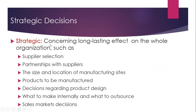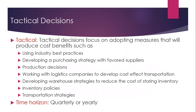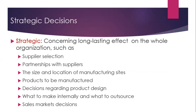There are three decision levels: strategic, tactical, and operational. Strategic level decisions have long-lasting effects on the whole organization. These include supplier selection, partnership with suppliers, the size and location of manufacturing sites, products to be manufactured, decisions regarding product design, what to make internally and what to outsource, and sales market decisions.